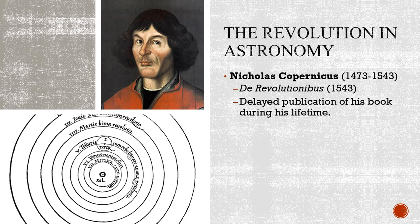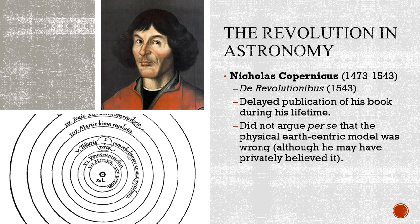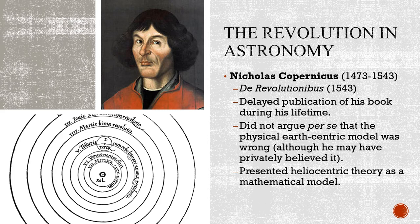Copernicus didn't explicitly argue that the physical Earth-centric model was wrong — rather he said that if you imagine the sun at the center, the math just makes sense. When the book was published, even the publisher appended a note saying the heliocentric theory was simply a mathematical model — not necessarily physical truth — because everyone knew it would not go over well with the church. Even so, this book would be incredibly influential to later generations.